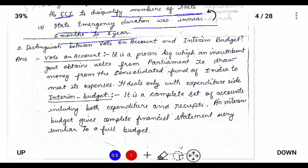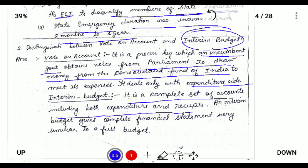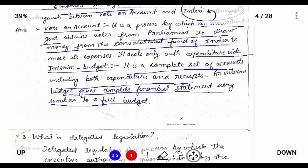Distinguish between Vote on Account and Interim Budget. Vote on Account is a process by which an incumbent government votes in Parliament to draw money out of the Consolidated Fund of India during the annual financial statement period. It deals only with the expenditure side. An Interim Budget, however, is a complete set of accounts including both expenditure and receipts, passed by an outgoing government before the next election is held — very similar to a full budget.